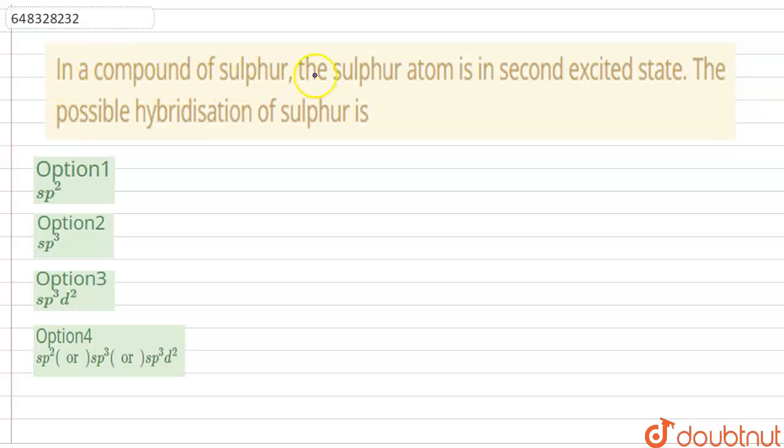Hello students, let's start the question. In a compound of sulfur, the sulfur atom is in second excited state. The possible hybridization of sulfur is?